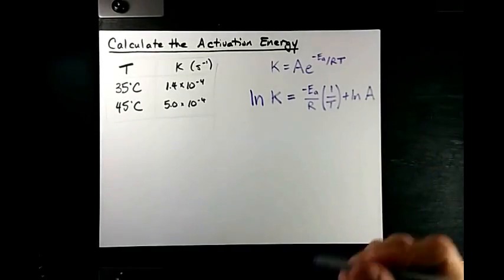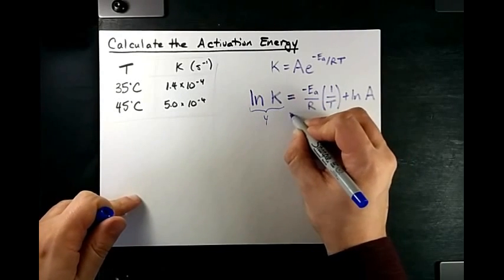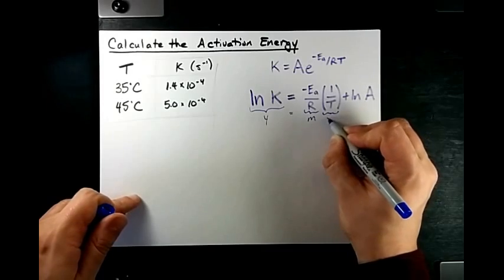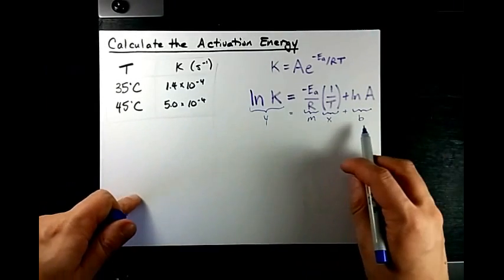Now, this is important because this equation takes the form of y equals mx plus b, which is a straight line.